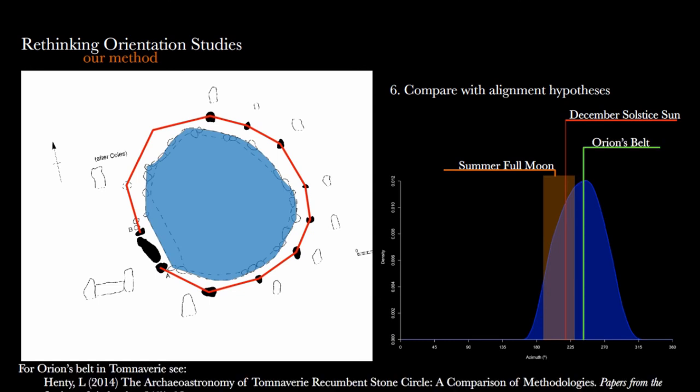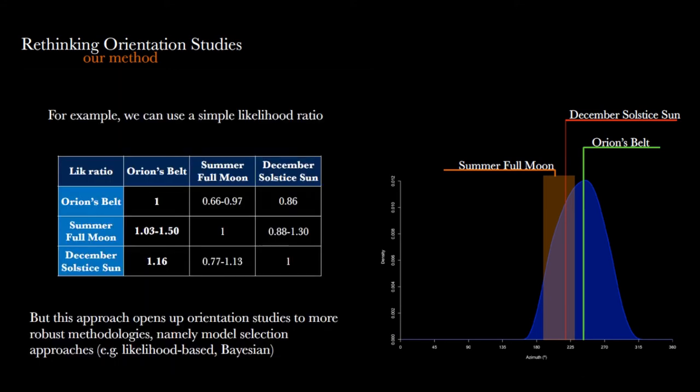However, what is close to that peak—and I found this interesting—is Orion's belt, the belt of Orion's constellation, this massive constellation that is very visible in the night sky. Even in the light-polluted skies of London today, you can see it. In fact, this was suggested by a colleague of mine, Liz Henty, who did a more phenomenological approach to this site and identified that actually the image of Orion setting over the recumbent would have been quite spectacular. So maybe this is a suggestion that needs to be considered in more detail. This is certainly what this data seems to suggest.